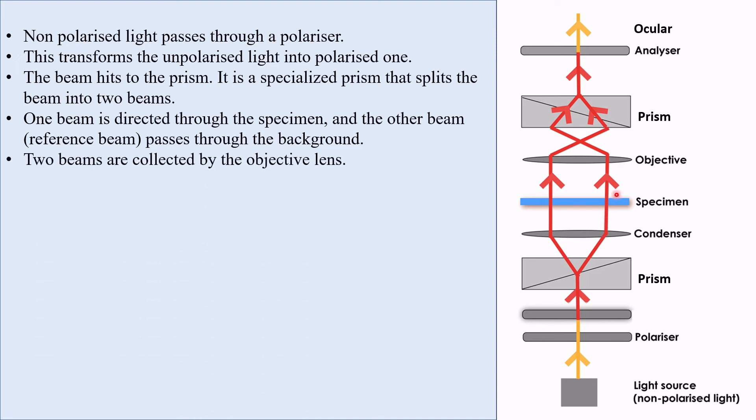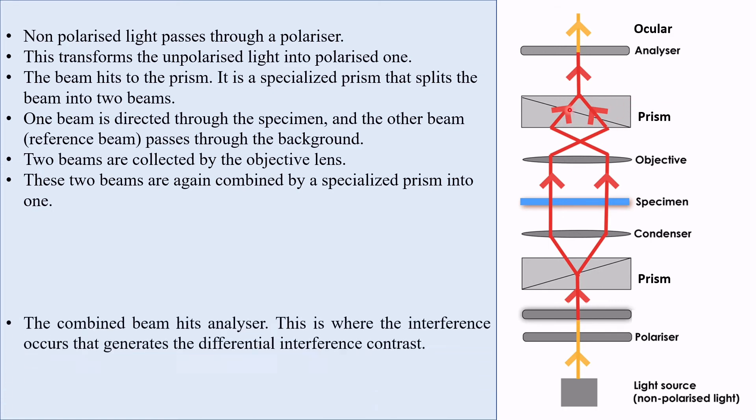Two beams are collected by the objective lens. In this objective lens, these two beams are collected. These two beams are again combined by a specialized prism into one.